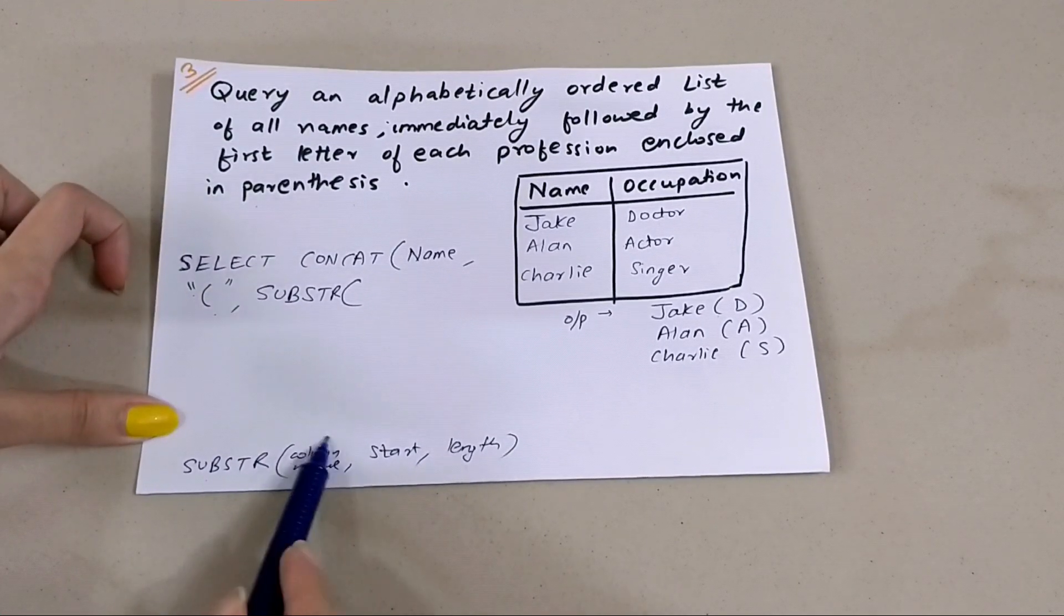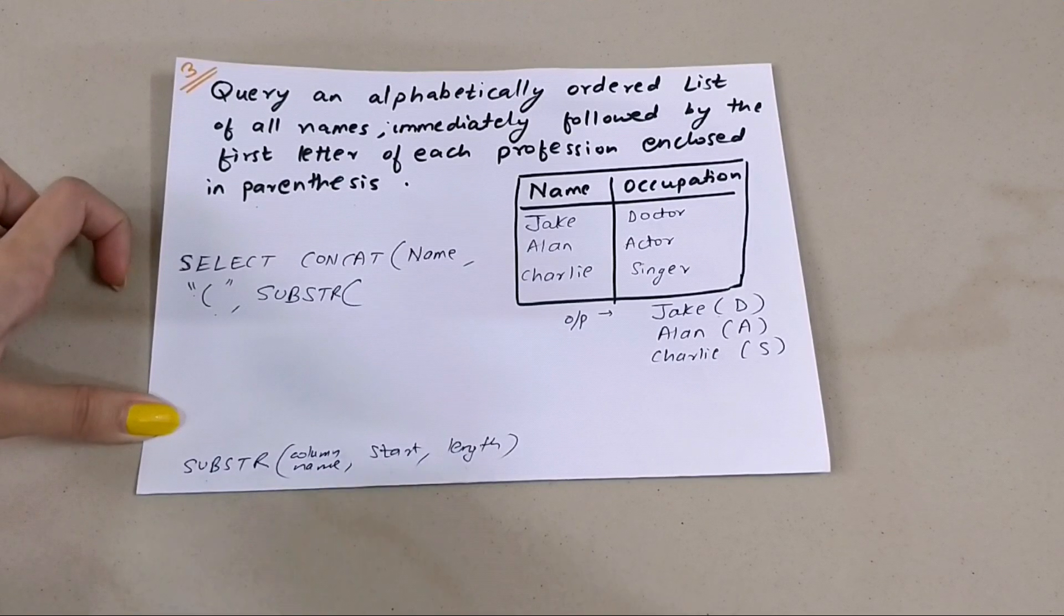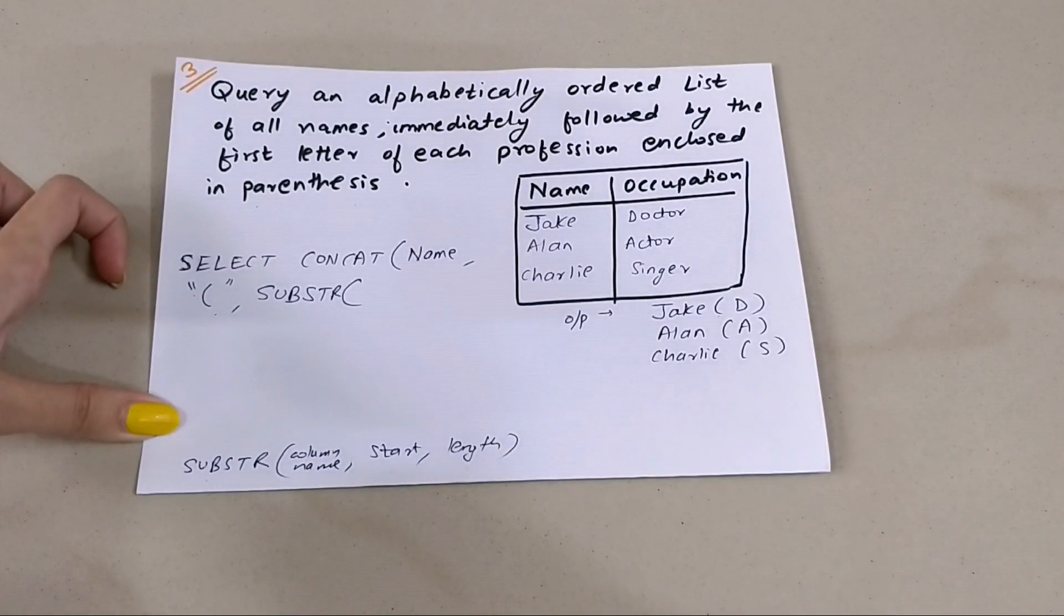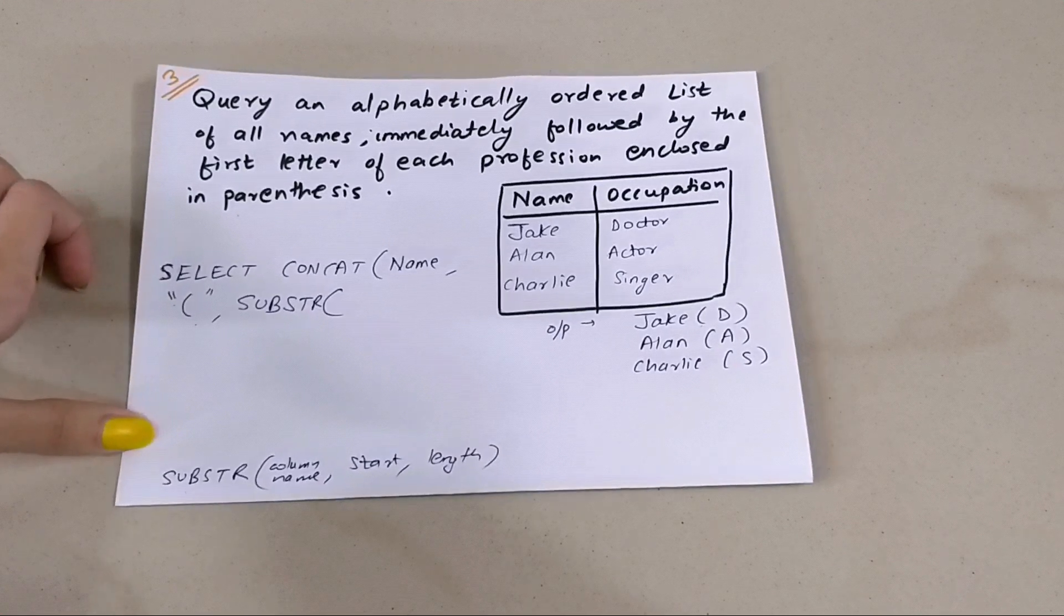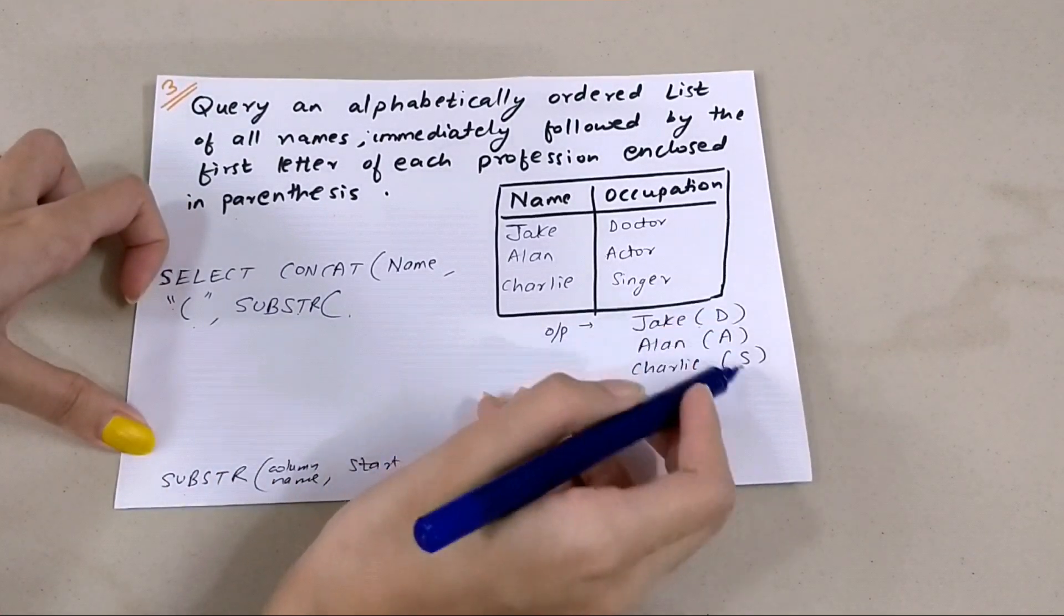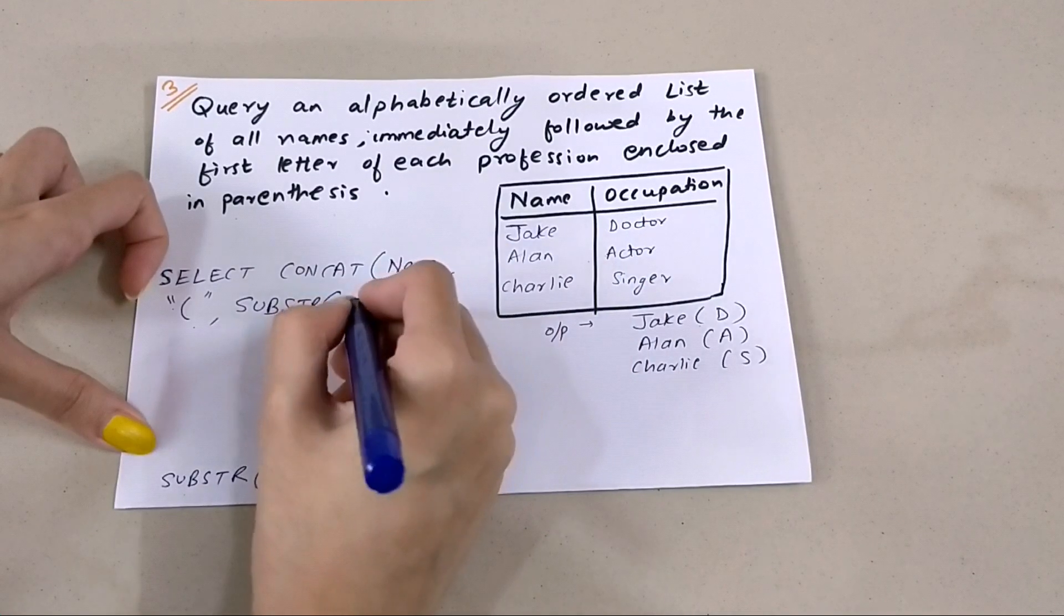The first one is the column name, the second one is the starting index, and the third one is the length. So what we're going to write here is SUBSTRING - what is the column name for this? Occupation. So I'm going to write 'occupation'.